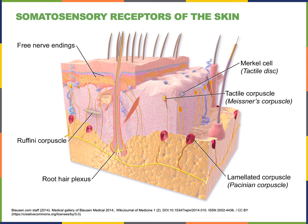Meissner's corpuscles are another encapsulated nerve ending found in the dermis, also known as tactile corpuscles. They are found in dermal papillae in the superficial papillary layer of the dermis, with a high concentration on the tips of the fingers. Meissner's corpuscles are very sensitive to the onset of light pressure and also respond to medium frequency vibrations on the surface of the skin.